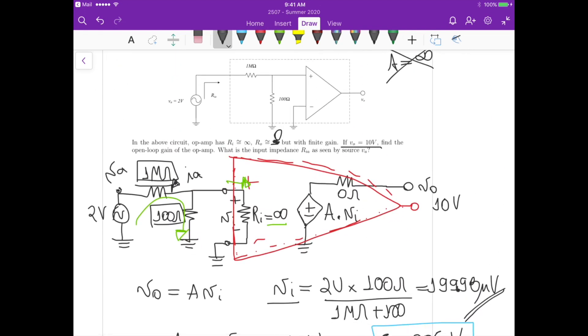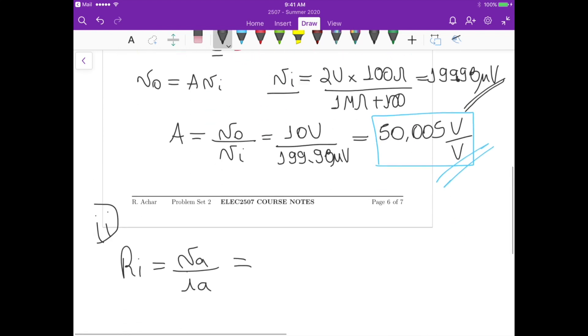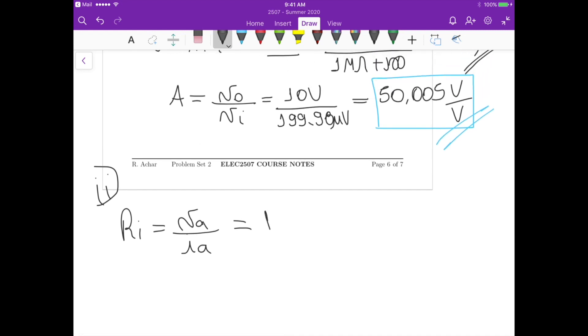But because this is a series path, right, as I just drew, the current here—because this current I_a is also flowing down here through the 100 ohm—so the resistance seen by the voltage source is just one mega ohm plus 100 ohms, which is approximately one mega ohm. If you want to be precise, it's one mega ohm plus 100 ohms. So that's the final answer for the second part.